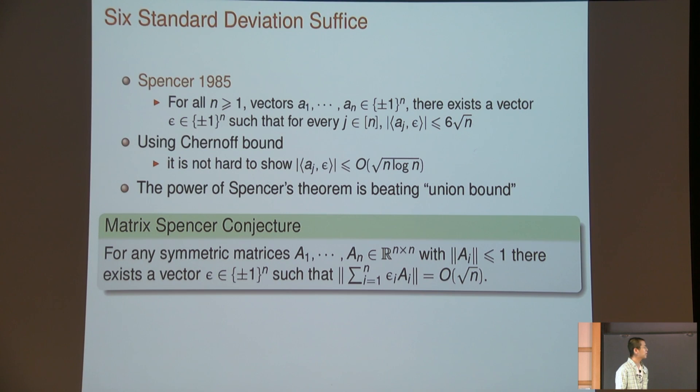He claims the following result: if I give you a bunch of vectors, they could be anything, and then he claims there exists a vector epsilon in {-1, +1} to the n such that for every j in n, the absolute value of a_j dot epsilon is at most six times the square root of n. This result can be implemented by using Chernoff bound, but you have to pay a log n factor. When you use Chernoff bound, you need to argue that because you have n different a_j's, you need to apply union bound for all the j's. To make sure your probability is good enough for union bound, you need to pay an extra log n factor. Basically, Spencer's theorem is saying the power is just beating the union bound here.